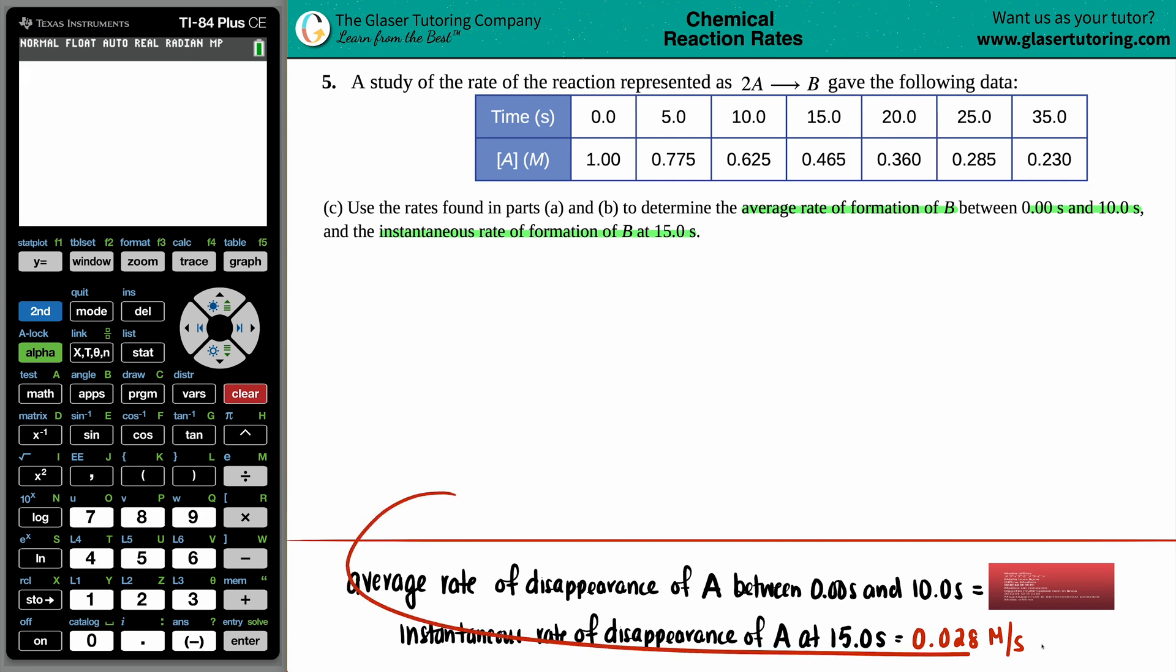Down here I put down the answers to part a and b. In a, we found the average rate of disappearance of A between 10 and 20 seconds, which was 0.0375 molarity per second. In part b, we found the instantaneous rate of disappearance of A at 15 seconds, which was 0.028. If you have any questions about how these values came about, you can always go back to those parts in the channel. They're in the playlist, which I highly recommend - it gives all these videos purpose and meaning and makes it easier for you to find the videos.